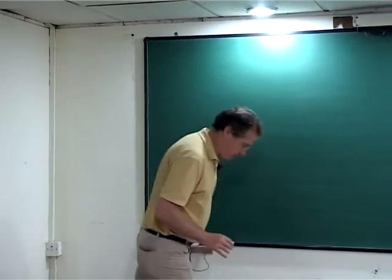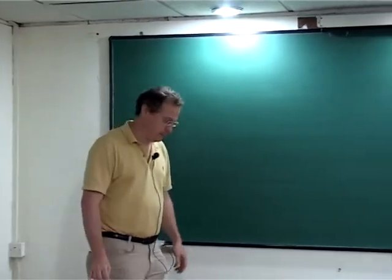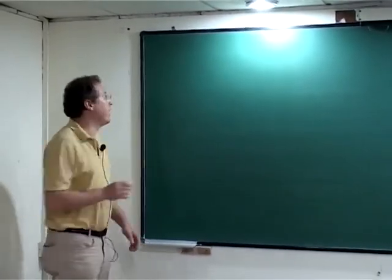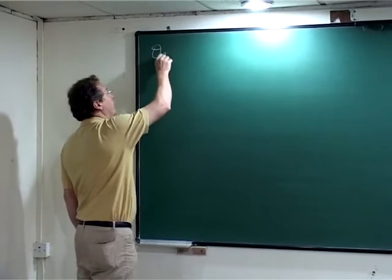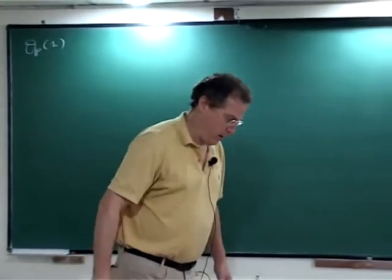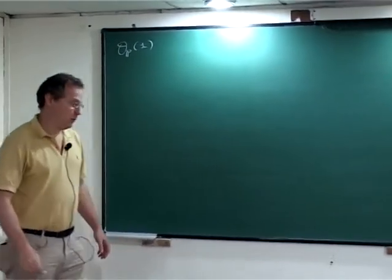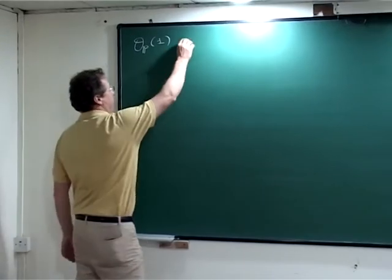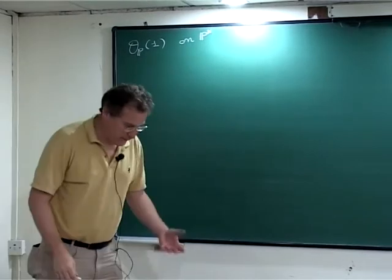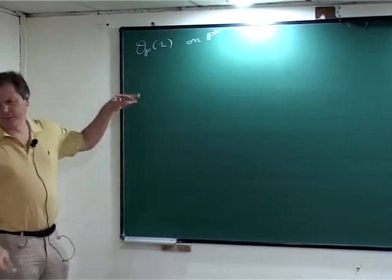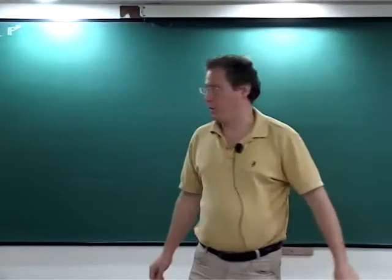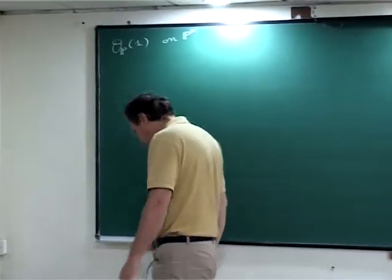Before I start what I want to say today, I would like to better explain what is O of P of 1, the famous tautological line bundle on P^N. The starting point, I will explain essentially on P1, and on P^N you can do by exercise to generalize everything.